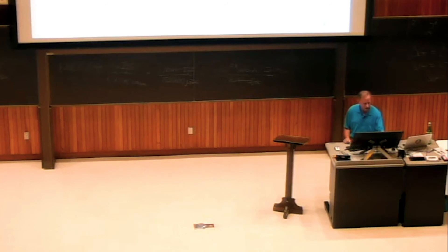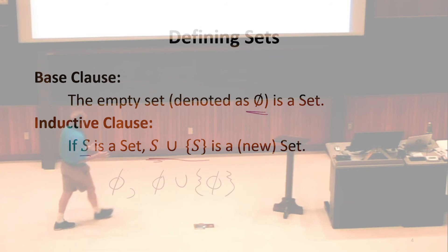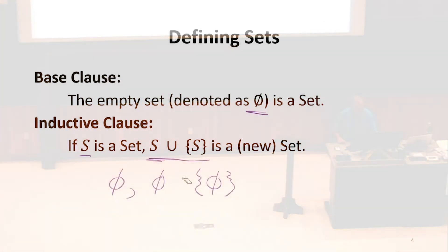So that means the set, this union, the empty set union, the set containing the empty set. What would be a better way to write the set of the empty set union, the set containing the empty set? It's just the set containing the empty set. If we union the empty set with something, we get what we had. So we can erase that.